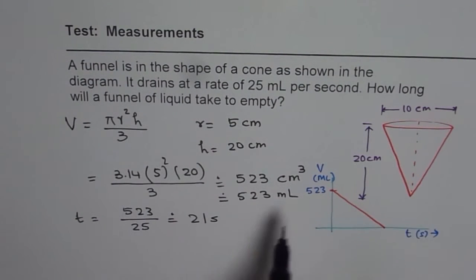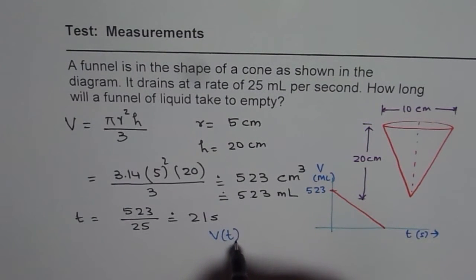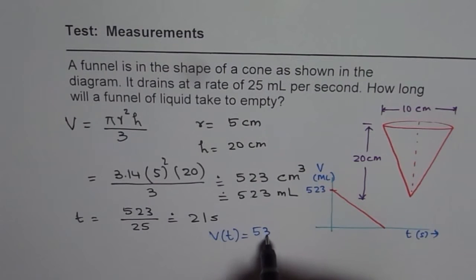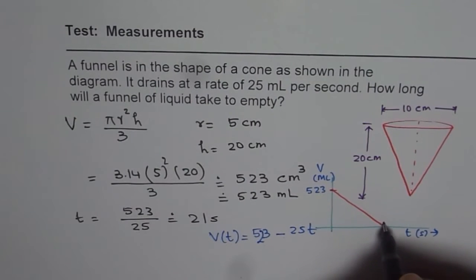Since the rate is 25, the equation of the line will be volume at any time t equals the starting value 523 minus the rate 25 times t. So that could be the equation used so it will be 0 after 21 seconds.